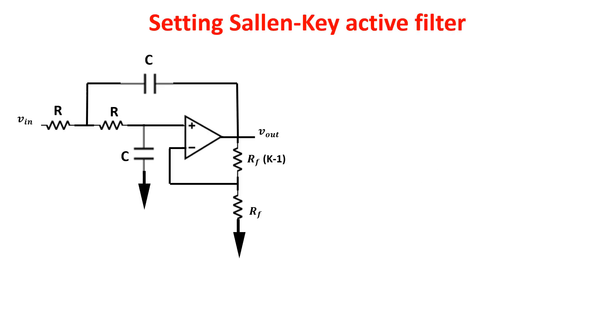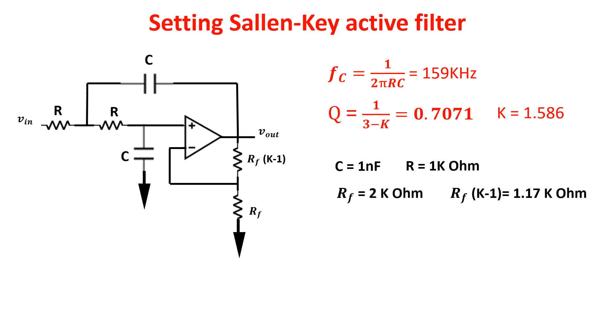Here an example. We want a second order filter with a cutoff frequency of 159 kHz and the Butterworth response. So Q is 0.707 and K is 1.586. We choose capacitor of 1 nF and we get resistor of 1 kOhm. Rf can be chosen as we want so we take Rf 2 kOhm and Rf times K minus 1 is 1.17 kOhms.